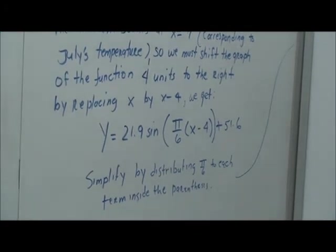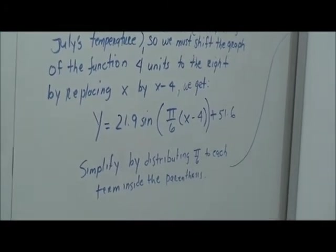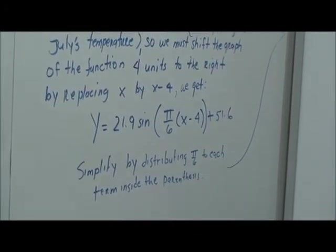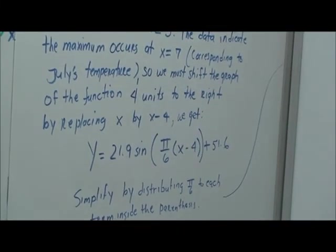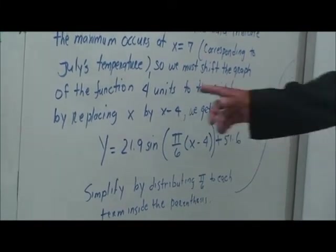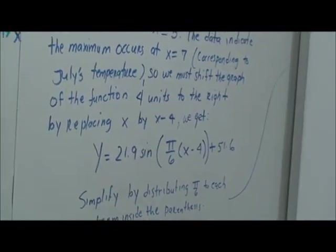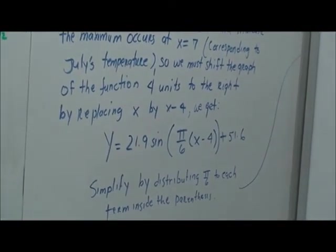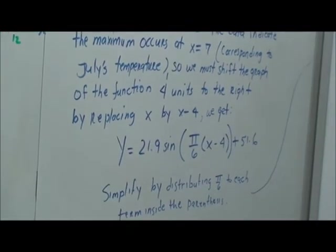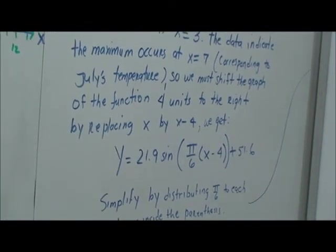And from the data, though, it indicates that the maximum occurs at seven. But corresponding to July's temperature, so we must shift the graph of the function to four units to the right. All right. What do we do? This is going to be, by replacing x minus four, we're going to get what?